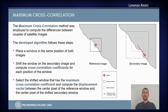To give an overview of the maximum cross-correlation method: it is a technique that in this study was employed to compute differences between couples of satellite images. The algorithm works as follows — we have two images, the first called the reference image and the second the secondary image, and we place a window in the same position in both images. The window on the secondary image is then shifted in all directions, and for each shift a cross-correlation coefficient is computed.